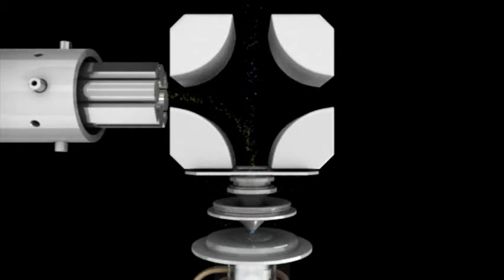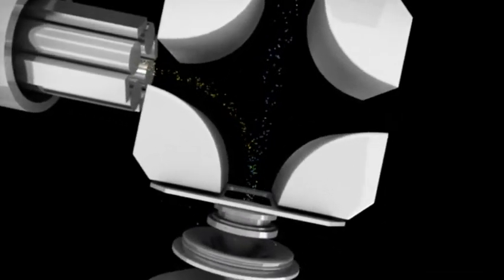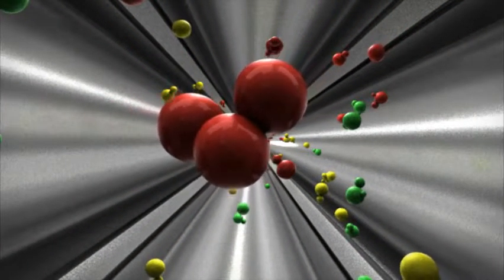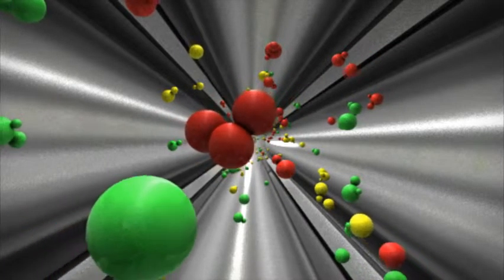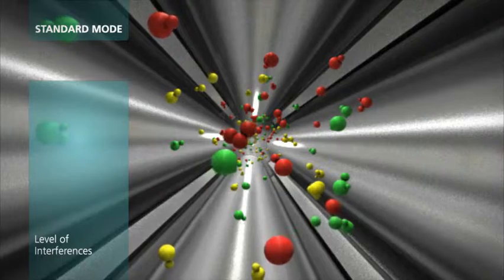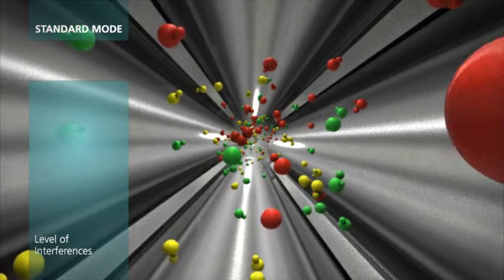The focused beam of ions passes from the quadrupole ion deflector into the universal cell. Depending upon your required level of interference removal and detection limits, the universal cell can be run in three different modes. For high-throughput routine applications, standard mode allows Nexion to operate like a non-cell instrument.